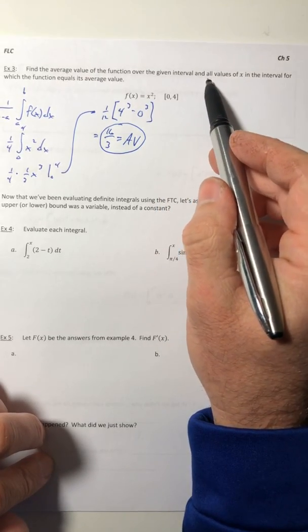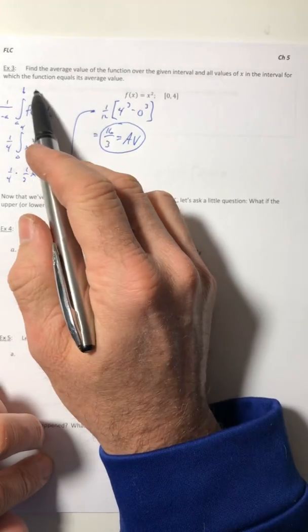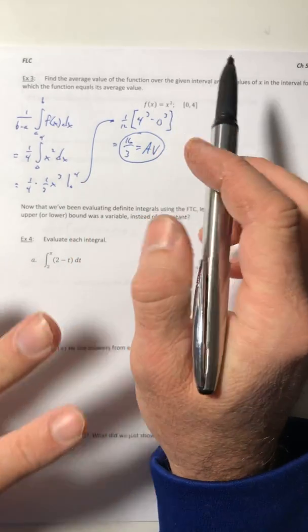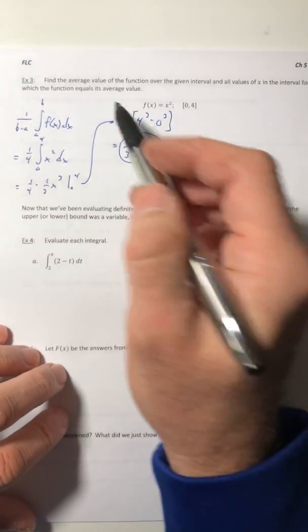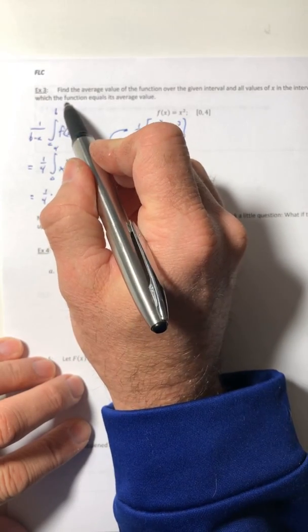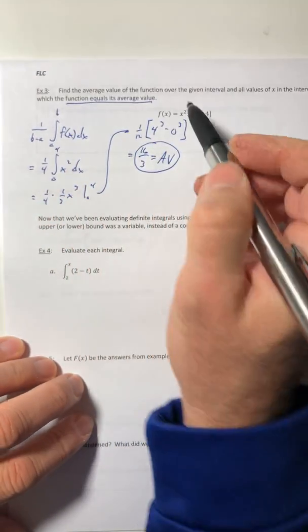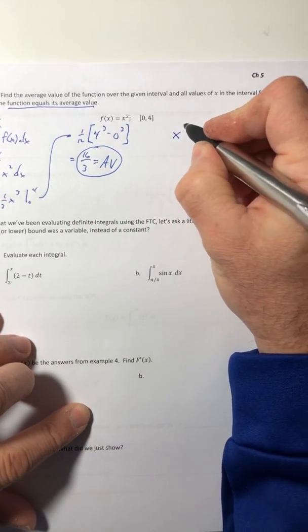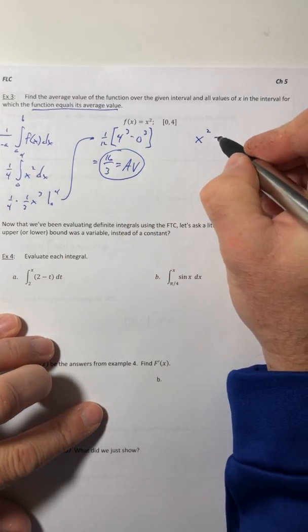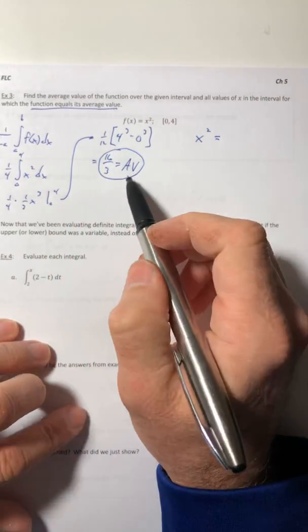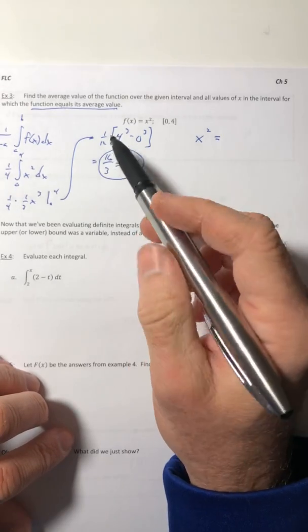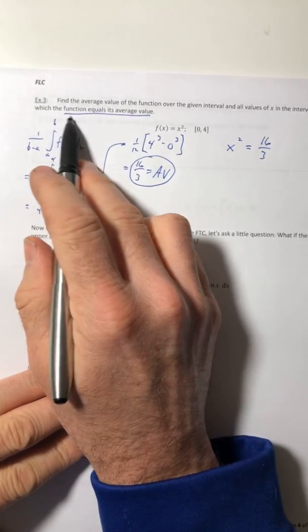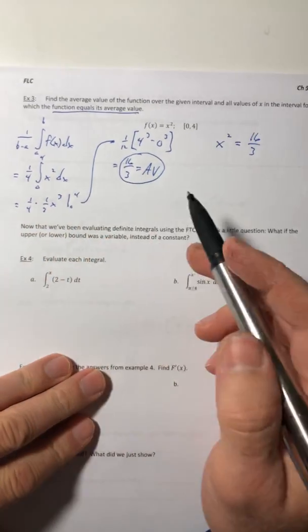But then it also wants us to find all values of x where the function equals its average value. And I have a lot of students that just get totally lost. They just don't know what to do. Well, it literally says what you need to do. The function equals its average value. So take the function equals its average value. What was your average value? 16 thirds. So if you just read this and literally write that down, then you've got an equation to solve.